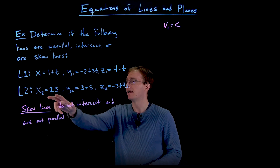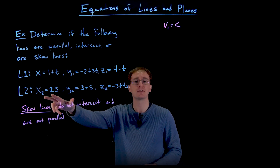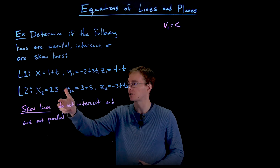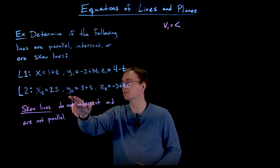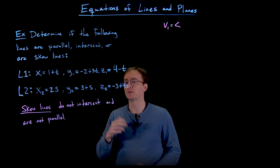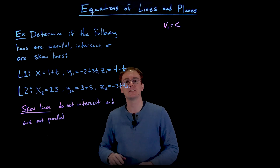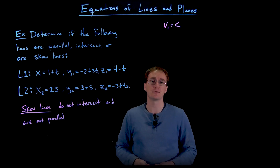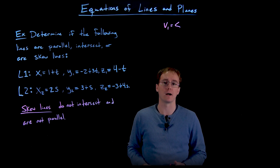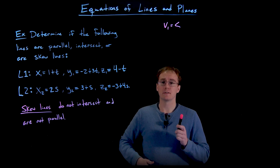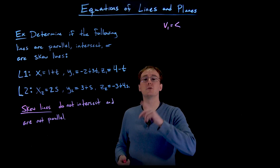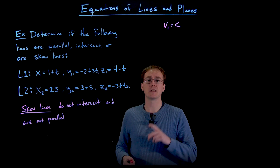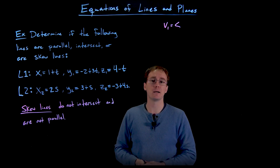Here we have the parametric equations for our first line L1: x = 1 + t, y = −2 + 3t, and z = 4 − t. Our second line has its own parametric equations: x = 2s, y = 3 + s, and z = −3 + 4s.